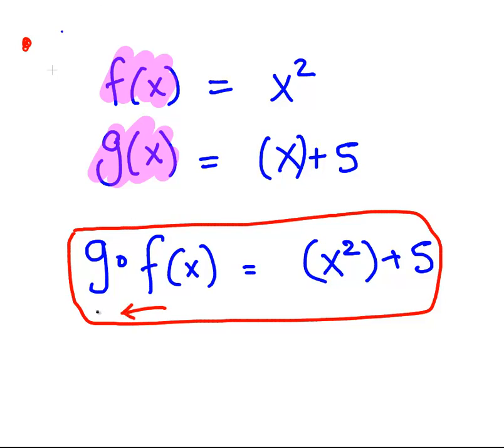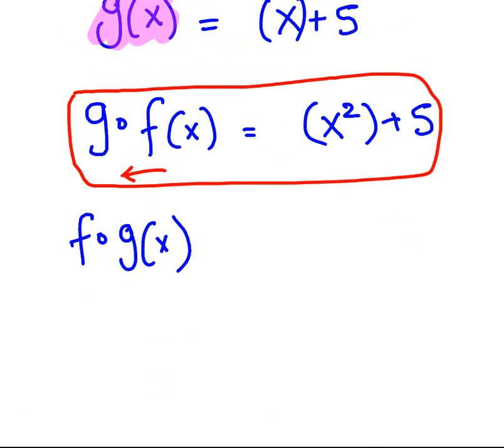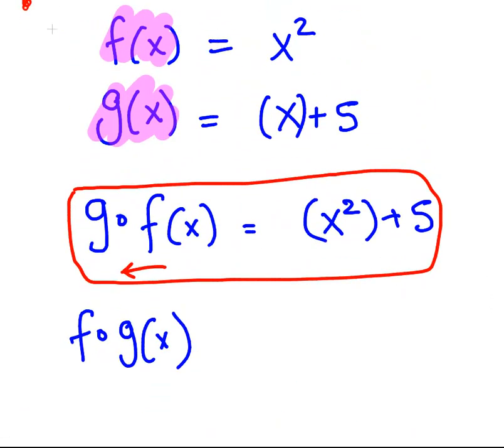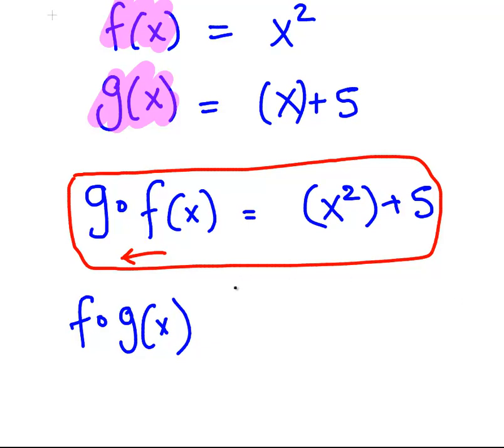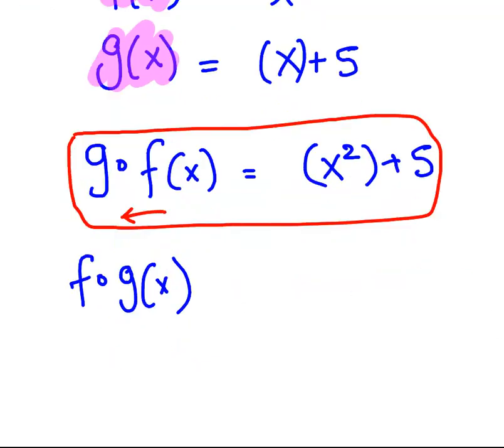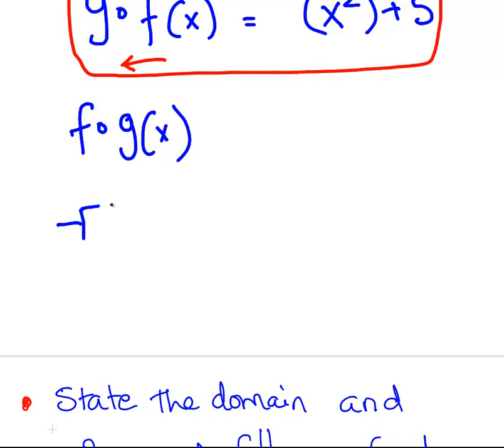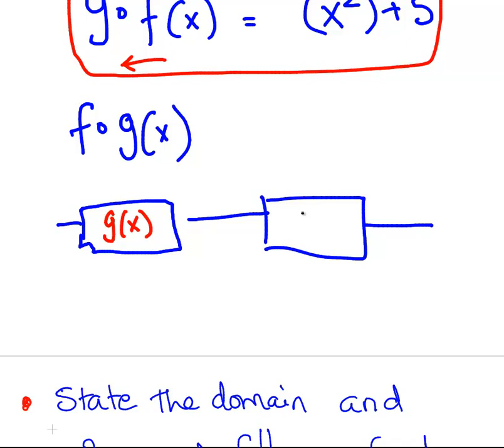So let's actually look at the opposite case now, g of f of x. Or f of g of x, even. So what do we have here? g of x equals x plus 5, then x squared. So let's just use actually our pipeline again. So our input, the first function, g of x and f of x. Our input is x and our output is x plus 5.